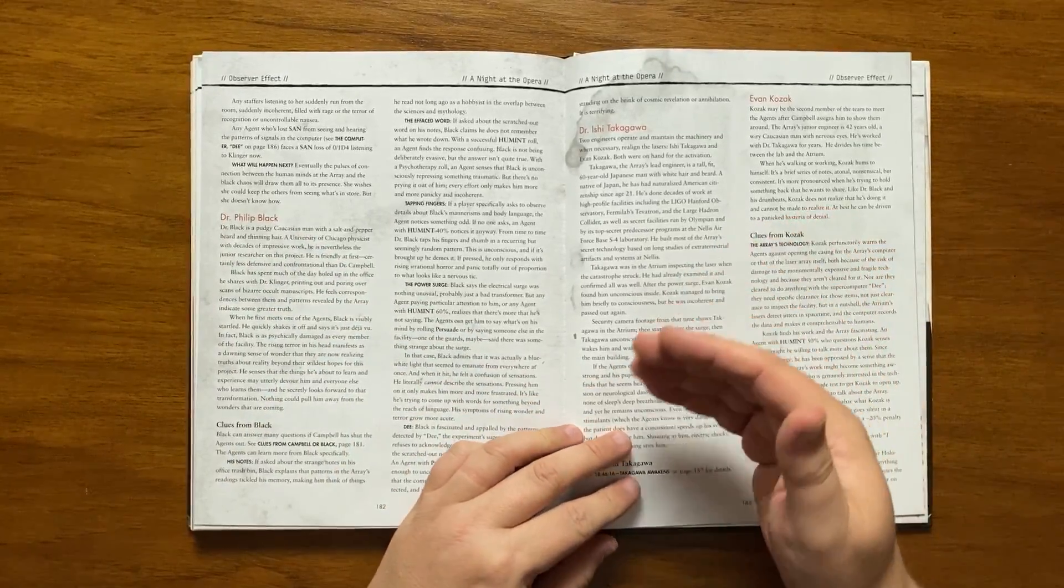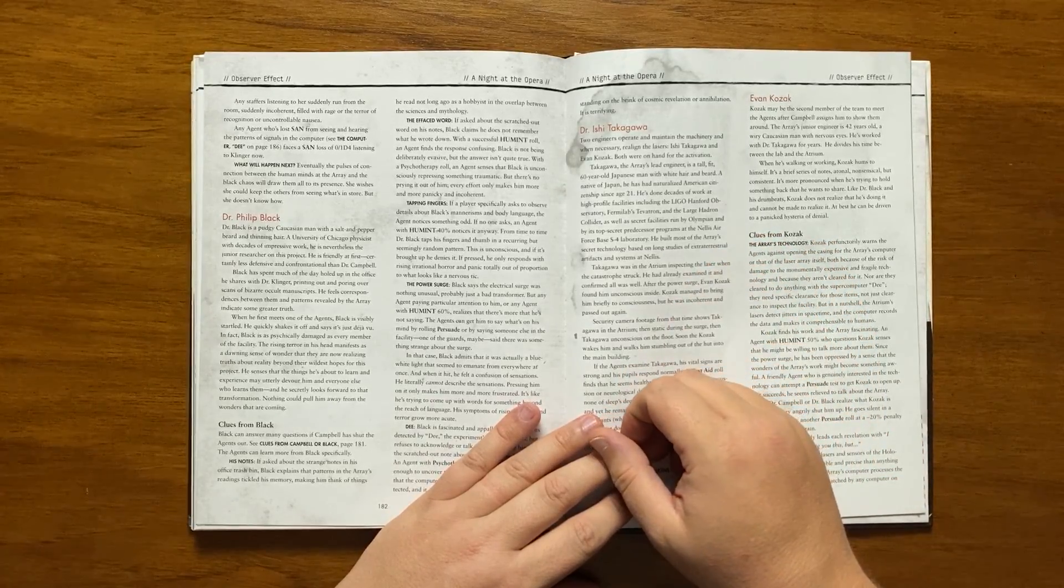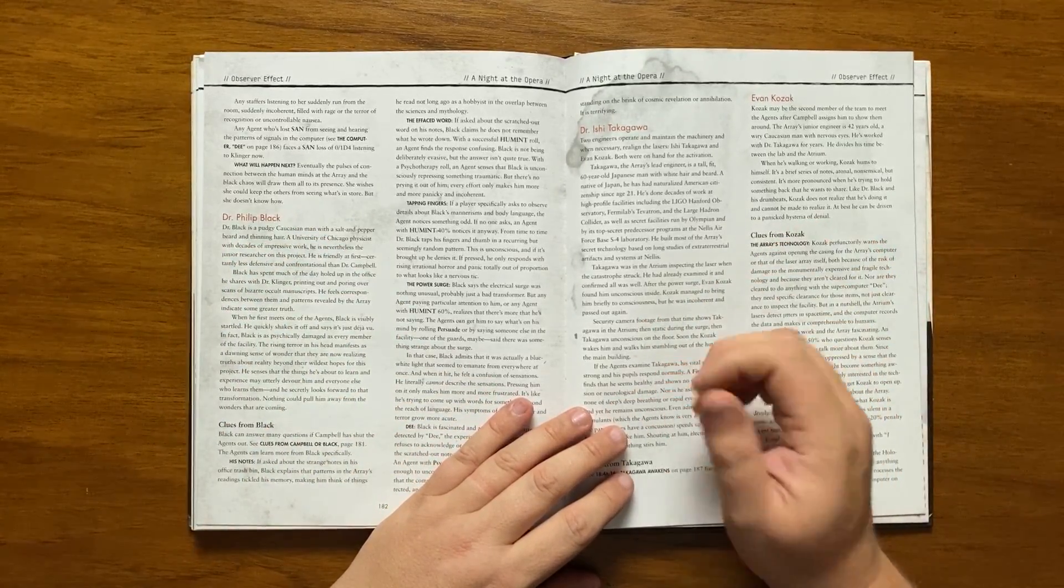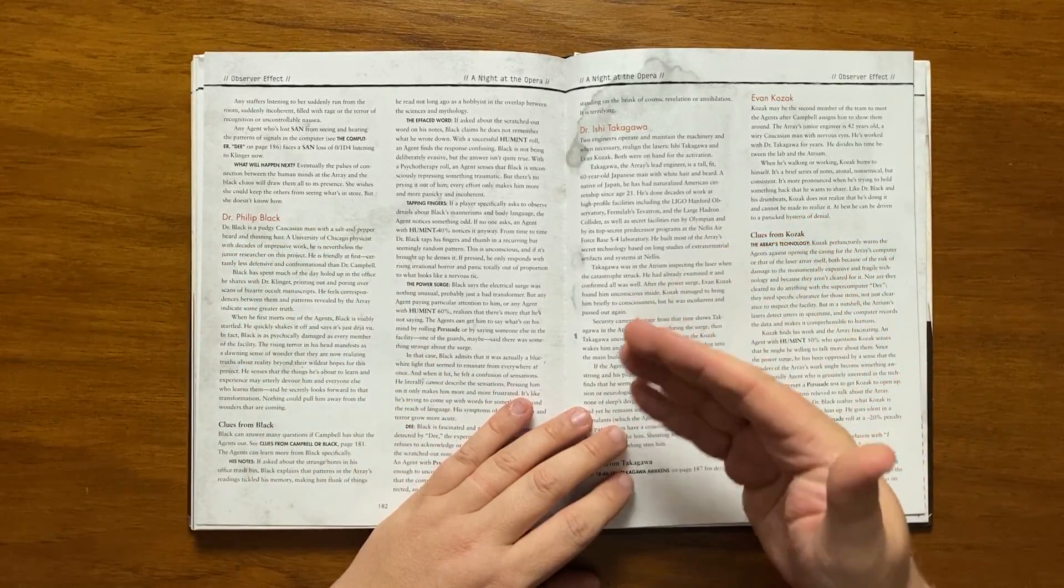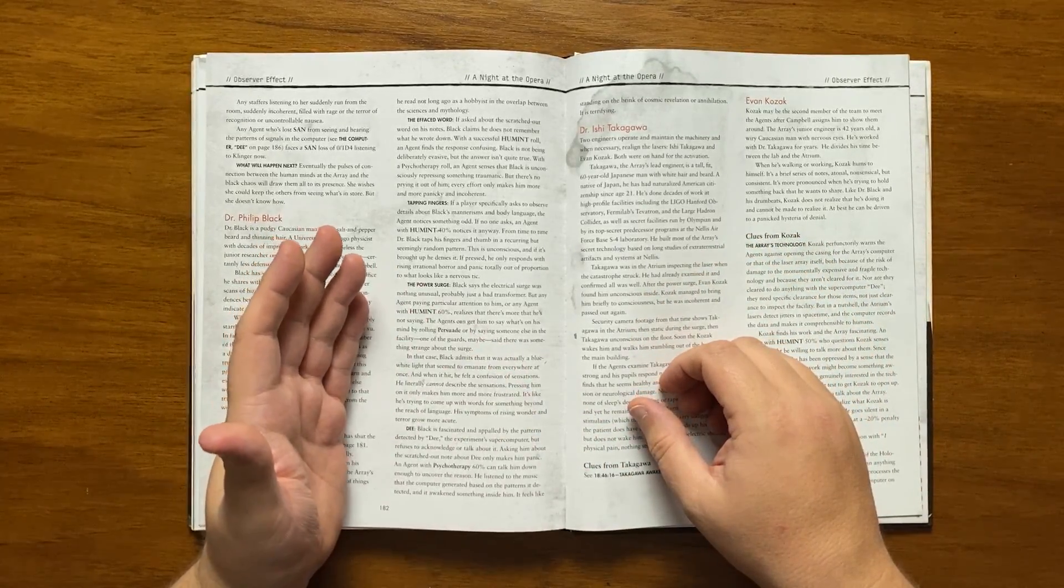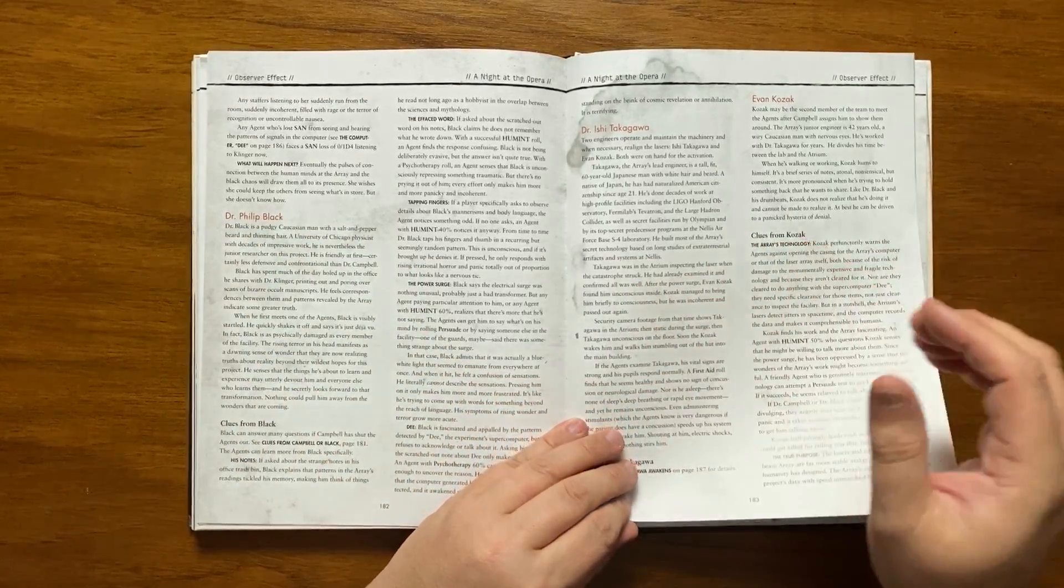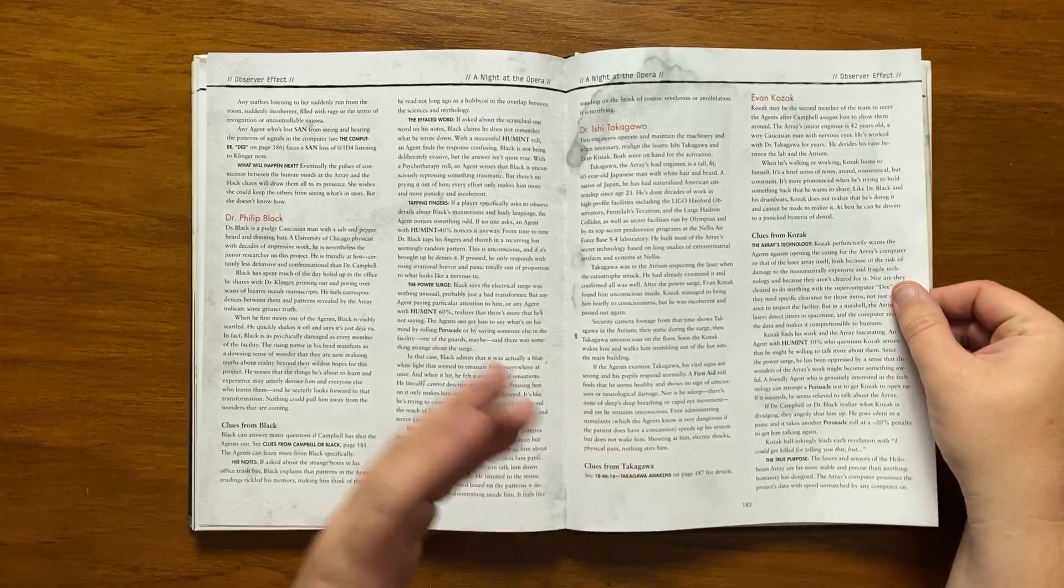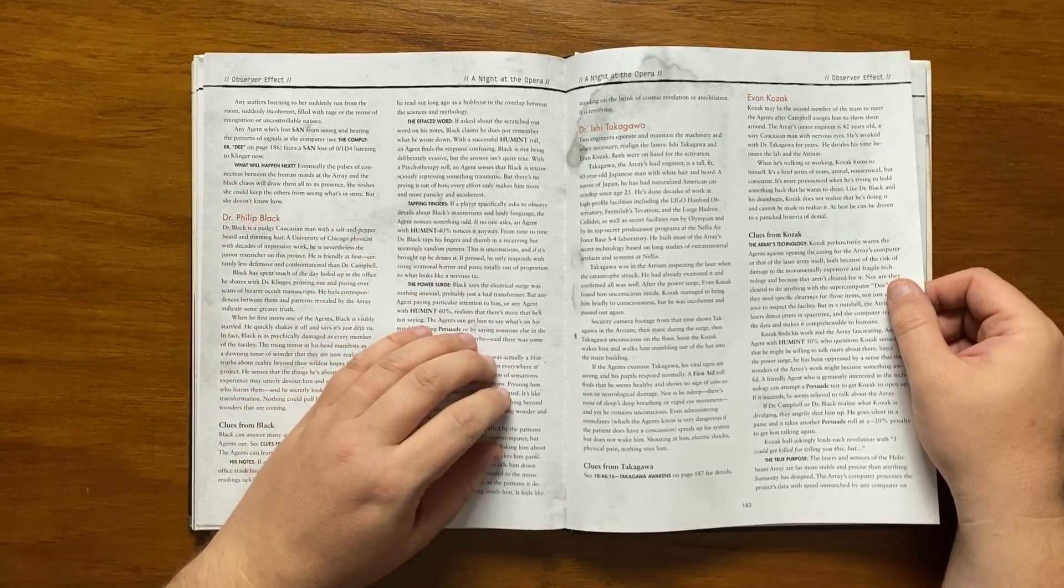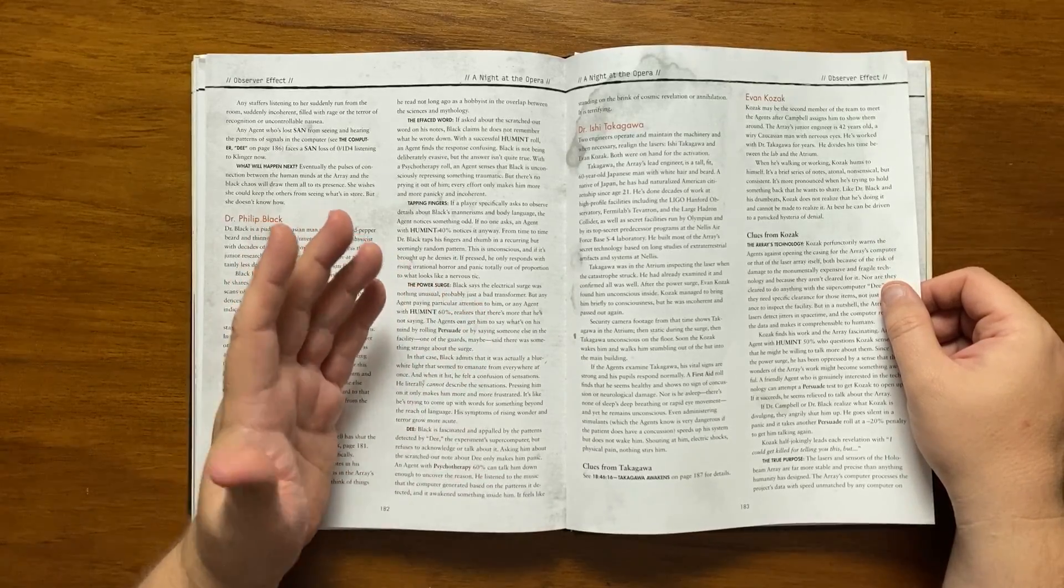He's a pudgy caucasian man and though having decades of impressive work as a physicist is the junior researcher. He's looking for something more spending time in his office poring over a cult manuscript and is startled to meet the agents putting it down to deja vu. His terror manifests as a sense of wonder at the truths they are discovering secretly looking forward to the sense of absolution contained within the things he will learn. If he is asked about the strange note in his bin he explains that the patterns in the array piqued his interest in things he'd read as a hobbyist that overlap mythology and science. If he is asked about the scratched out word he does not remember though it can be determined through the right roles that he seems to be repressing something traumatic. He can also be noticed tapping his fingers while being questioned in a seemingly random but recurring pattern though he's unaware that he's doing it.